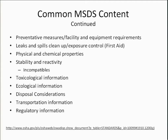Continuing with the content on MSDS sheets: preventative measures, facility and equipment requirements, clean-up procedures, exposure control, first aid recommendations, a listing of physical and chemical properties, stability and reactivity information, toxicological information, ecological information, disposal considerations, transportation information, and regulatory information — referring to government regulations on handling these materials. You can find additional resources on the site shown in this view graph.